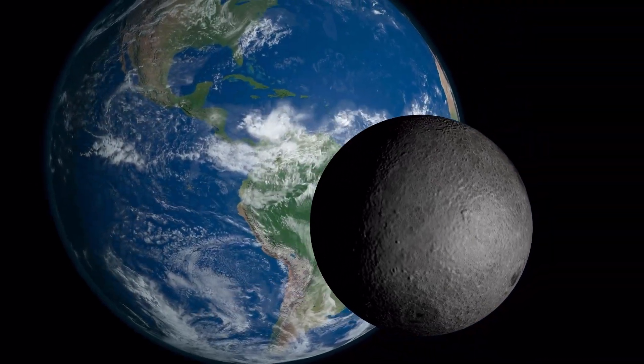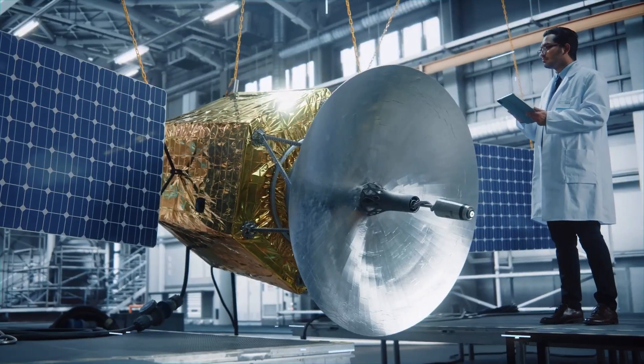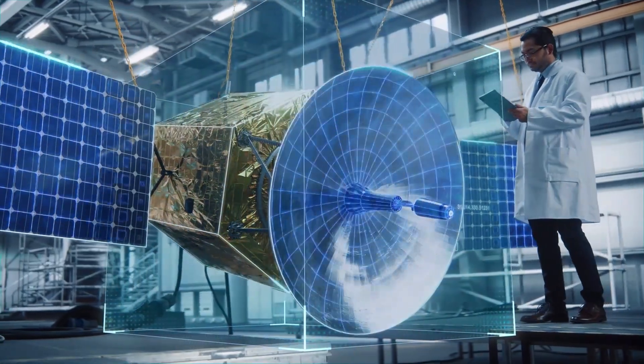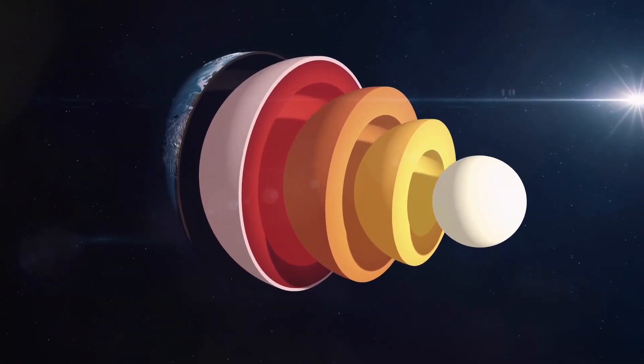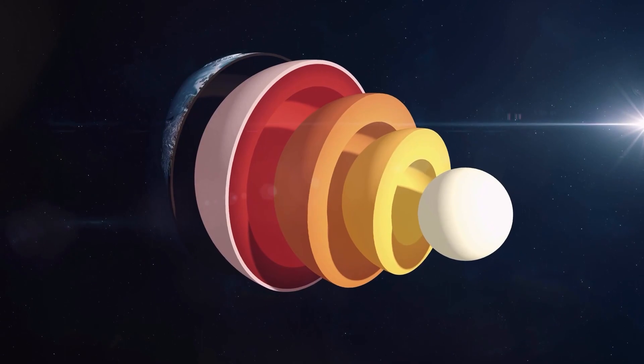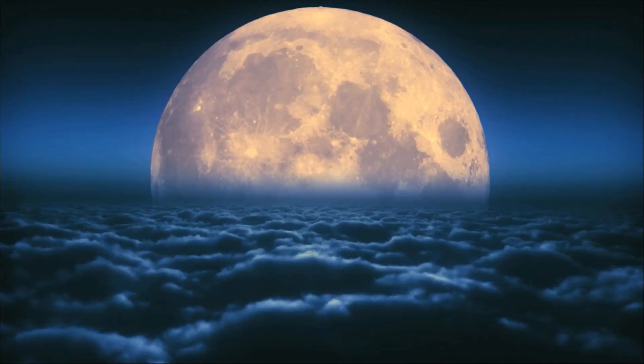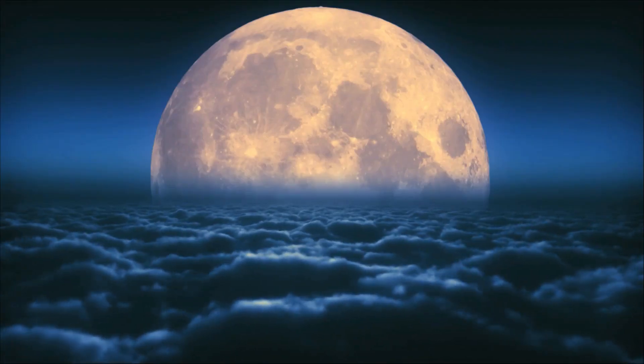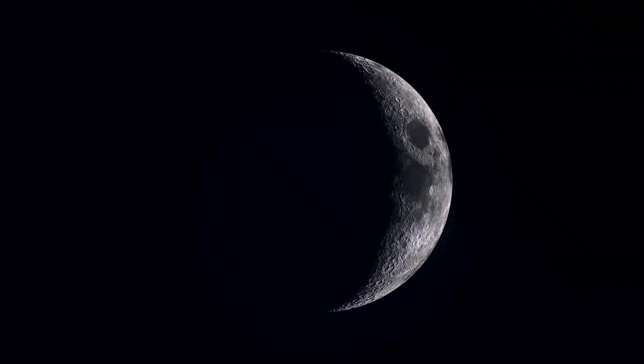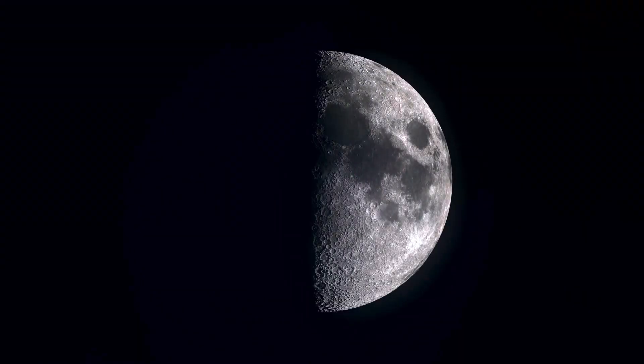After decades of speculation and investigation, scientists have finally confirmed that the inner core of the Moon is a solid ball with a density similar to that of iron. This discovery marks a significant milestone in our understanding of the Moon's history and the evolution of the solar system.